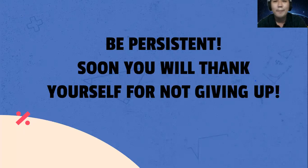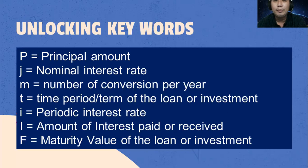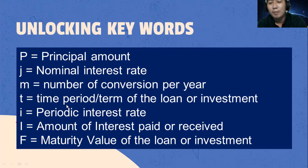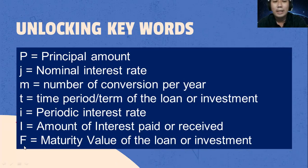Always remember, be persistent. Soon you will thank yourself for not giving up. These are the keywords to be used, just like what we had with our previous video. The principal amount is the amount of money being borrowed. The nominal interest rate is J. M is equal to the number of conversions per year. T is for the time or term of the loan or investment. We have the periodic interest rate I, and capital I is for the amount of interest paid or received. Then F is the maturity value or the face value.